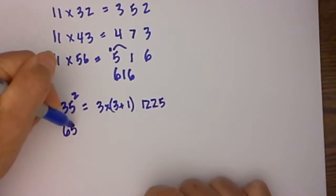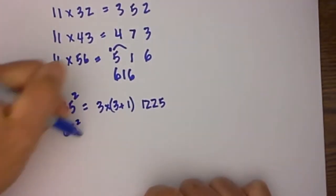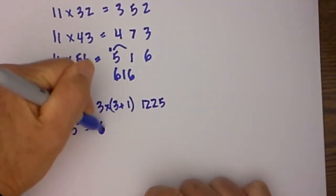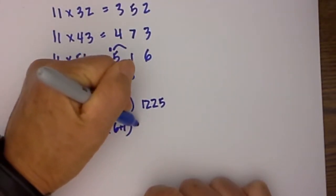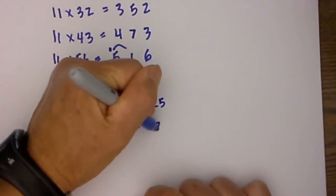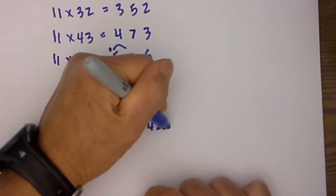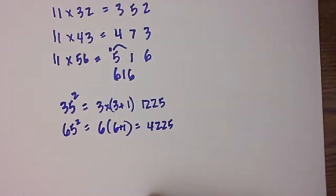Next up we have 65 squared equals 6 times 6 plus 1. 6 times 7 is equal to 42. Tack on the 25. Lo and behold, you have 4,225.